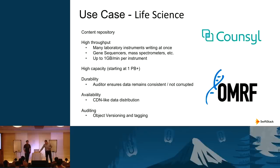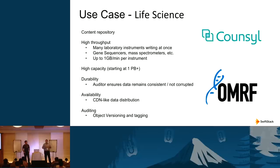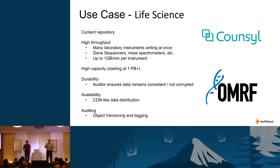Life sciences is another area where Swift is gaining traction as a content repository. Laboratory instruments — gene sequencers, mass spectrometers, various sensors — are uploading large amounts of data concurrently, requiring high throughput. The ability to spread data across multiple regions also gives the life sciences community everything they need to ingest data, process it, and publish results all within one centralized repository.